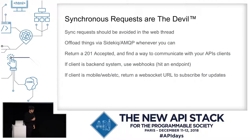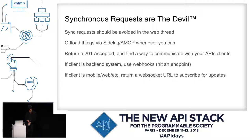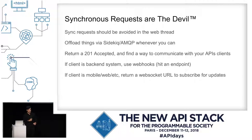Synchronous requests are the devil. If you have a backend application that talks to another backend application, and maybe that is talking to another backend application, if that's all happening synchronously, that's terrible. This whole talk is about how to make that work in the least painful way possible, but you should try and avoid doing that whenever possible. To offload work via Sidekiq or AMQP — message systems like Rabbit — if you can do that and just do the work later, you're golden. You can return a 201 accepted in your API, and then communicate some way to the client to let them know they can subscribe to changes, via webhooks, long polling potentially, or websockets.